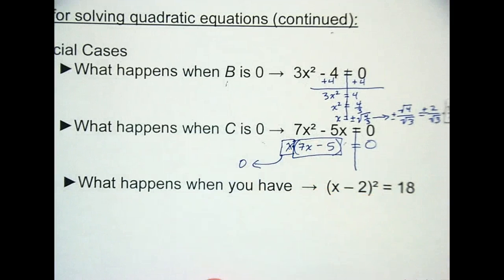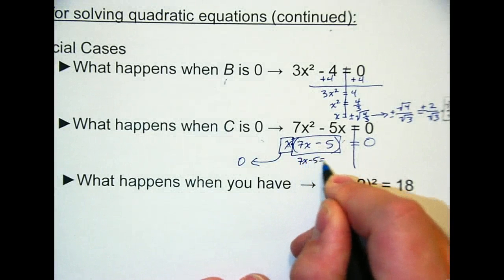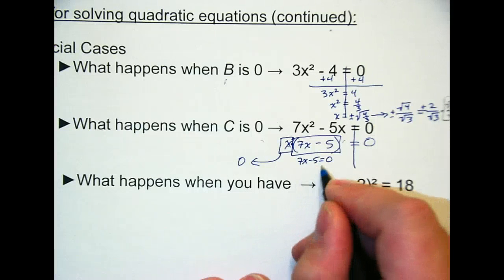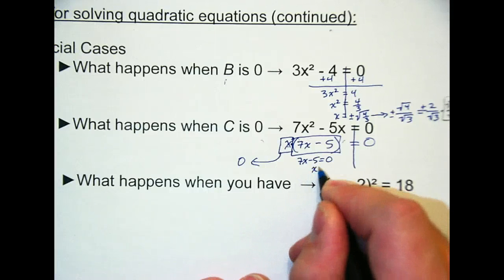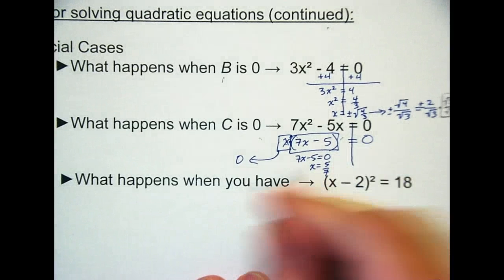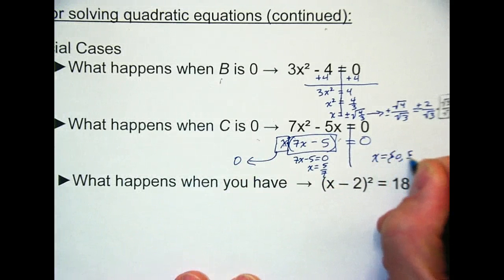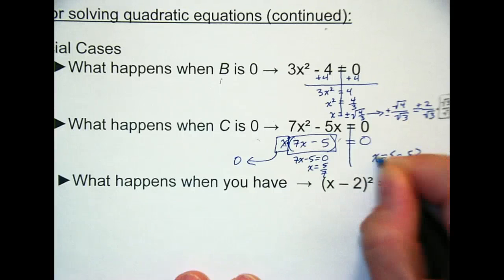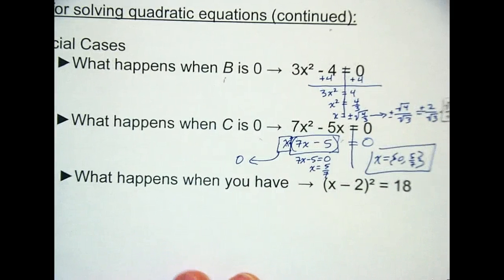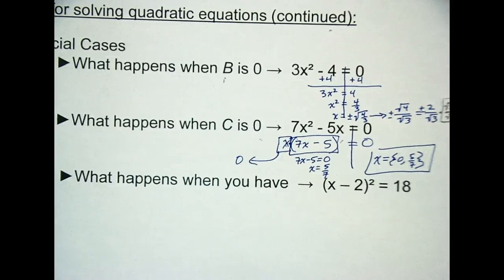What makes X zero? Zero does. What makes 7X minus 5 equals zero? You add 5, divide by 7 to solve that. So my two solutions are X equals zero and 5 sevenths. So again, those are the two X intercepts. That's where it crosses your X axis.